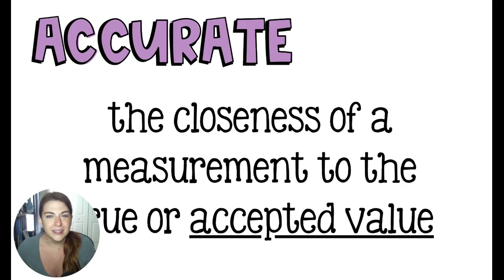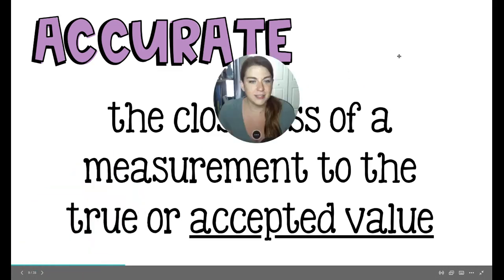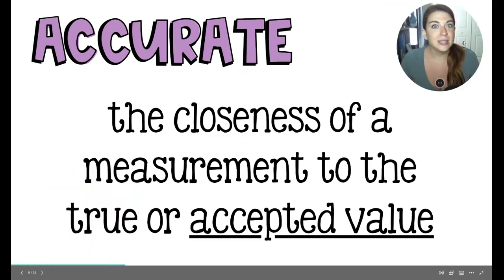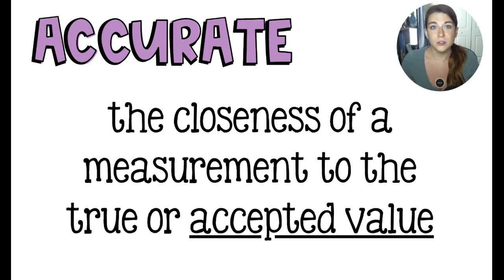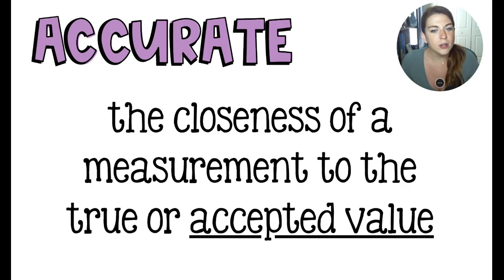To begin, what does it mean to be accurate? Accurate in a science setting indicates how close you are to the true or the accepted value. In science, the accepted value is going to be the one that is considered scientific fact — the one you'd find in a reference table, a textbook appendix, or online on a Wikipedia page for a chemical.